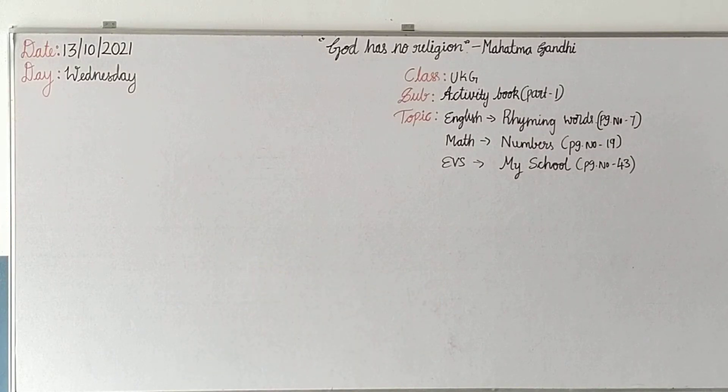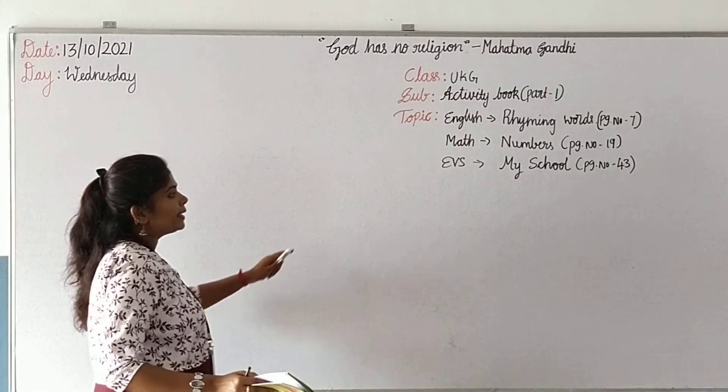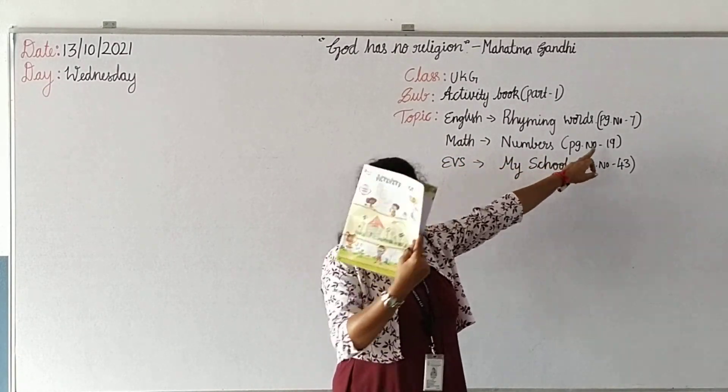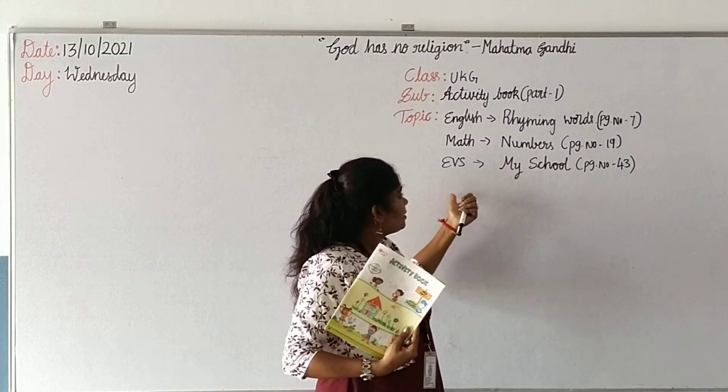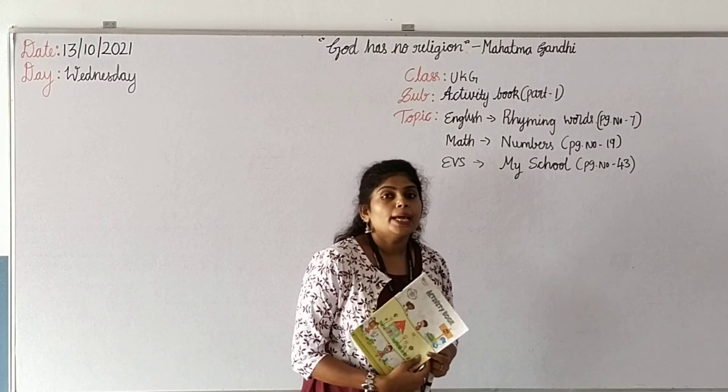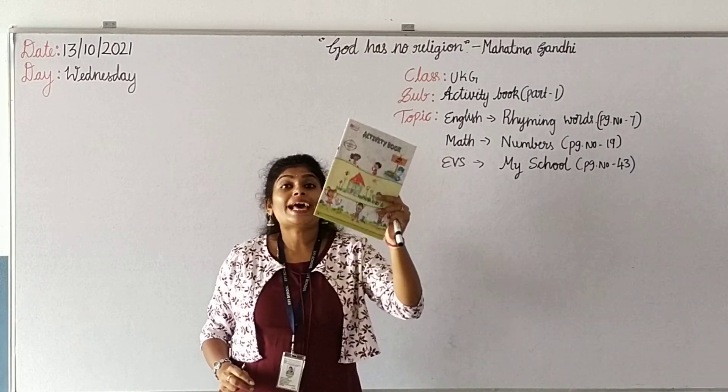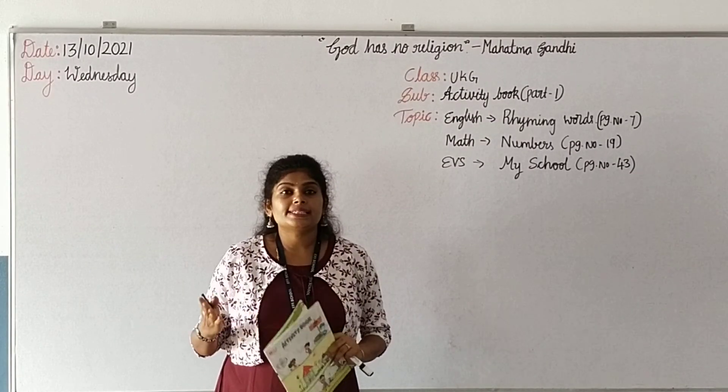So totally three activities. In English, rhyming words, page number seven. In math, numbers, page number nineteen. Then in EVS, my school activity, page number 43. This is all about activities for which lessons are completed in our main subject.